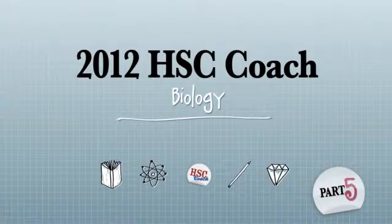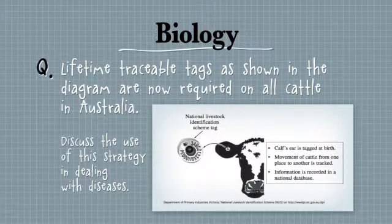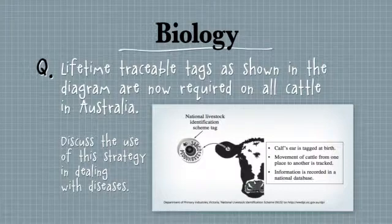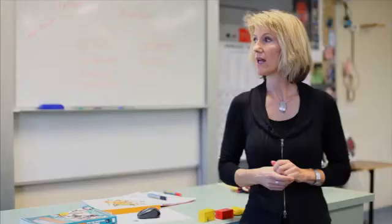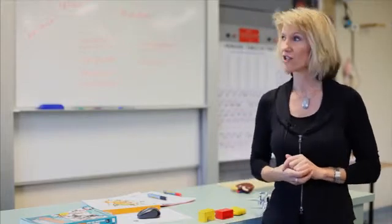Here's an example question from 2005 where they ask you to discuss the use of putting ear tags into calves' ears to help with dealing with diseases. You might make a table — on one side, points for: you can quickly tell where the calf has come from, track all its movements, and know what other cattle it had contact with. On the other side, points against: maybe it's expensive, or the tags could fall out. A quick table means you've done a discussion.